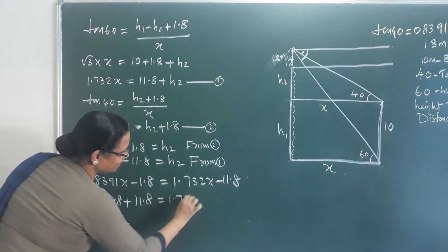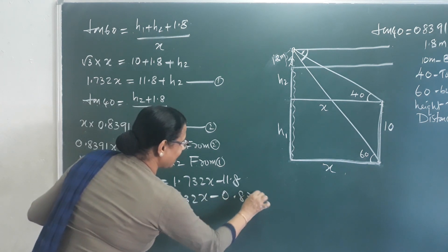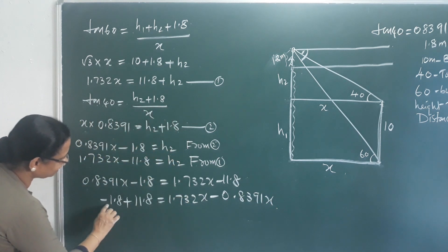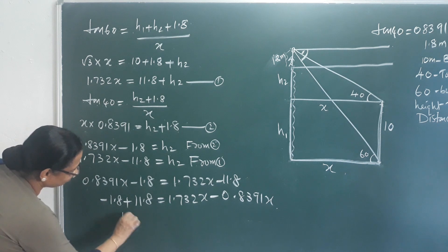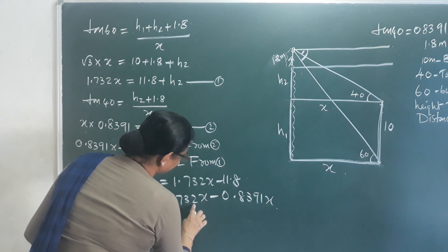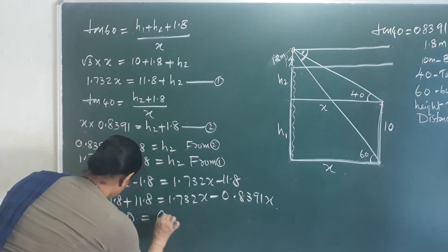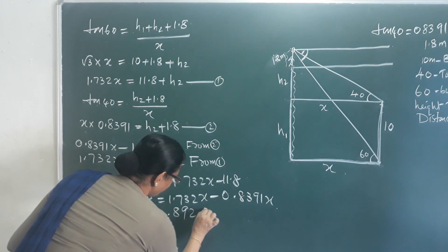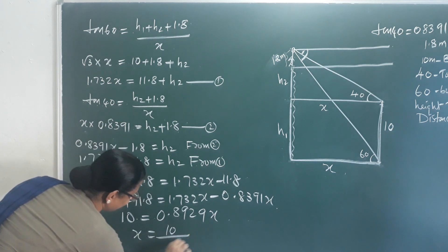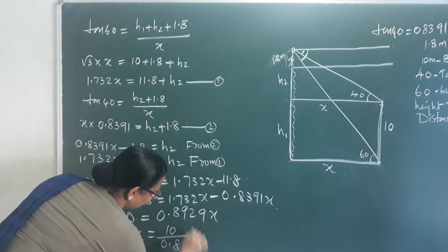Setting the two expressions for h2 equal: 1.732X minus 11.8 equals 0.8391X minus 1.8. Subtracting, 0.8929X equals 10, so X equals 10 divided by 0.8929, which gives X equals 11.19 meters.